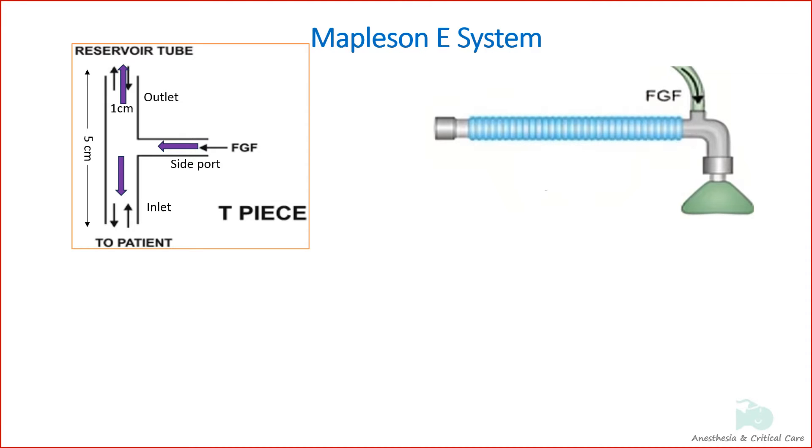Mapleson E system is derived from Ayre's T-Piece configuration by adding tubing to the expiratory part of the circuit that acts as a fresh gas reservoir during inspiration.